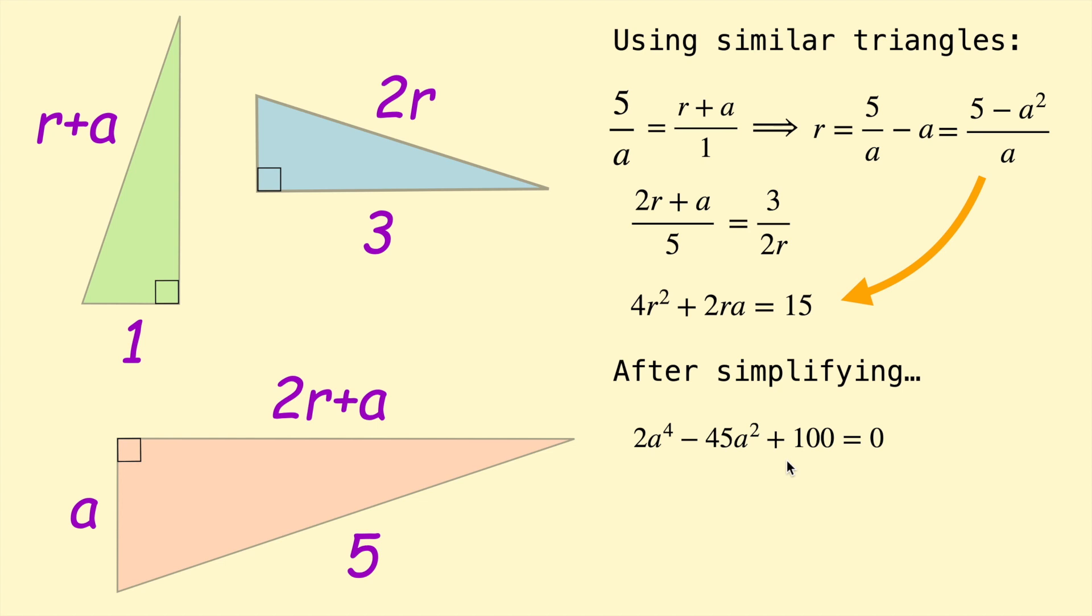But however you like, you can solve that quadratic and you should get two positive solutions. We don't care about the negative solutions because we're talking about lengths. So two positive solutions for A, they are root 10 on 2 and A equals 2 root 5.